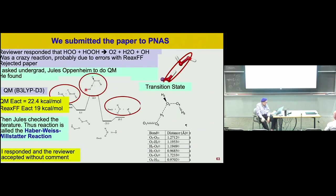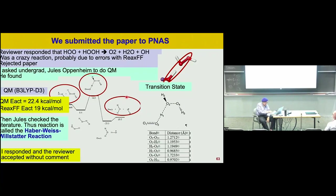We submitted a paper to PNAS and the reviewer said it was crazy — the reaction we found where HO₂ and peroxide gives O₂, water, and OH was dismissed and the paper was rejected. So I had an undergraduate do real quantum mechanics. He found an activation barrier of 22.4 kilocalories; we had estimated 19 kilocalories. He then checked the literature and found it's actually a well-known reaction — the Haber-Weiss-Willstätter reaction, discovered around 1930 with many papers from 1930 to 1940. I responded to the PNAS editor with this history and showed that quantum mechanics and ReaxFF agreed pretty well, and it was accepted.